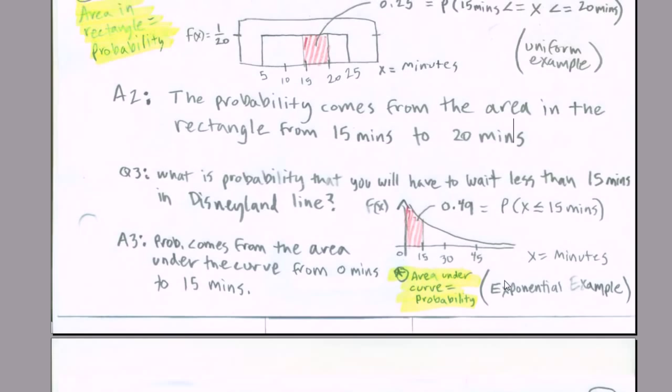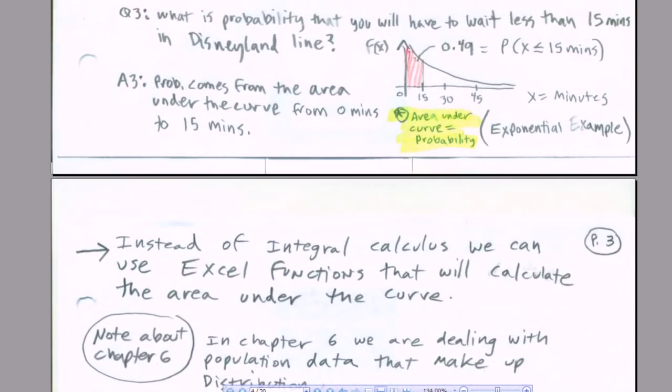And finally, for our exponential distribution, we're allowed to ask a question like, what is the probability that you will have to wait less than 15 minutes in a Disneyland line? The area or probability will come from the area under the curve. The answer will be 0.49%. All right, so we get the idea. It's always going to be between two x values, and it's going to be area, which is probability.